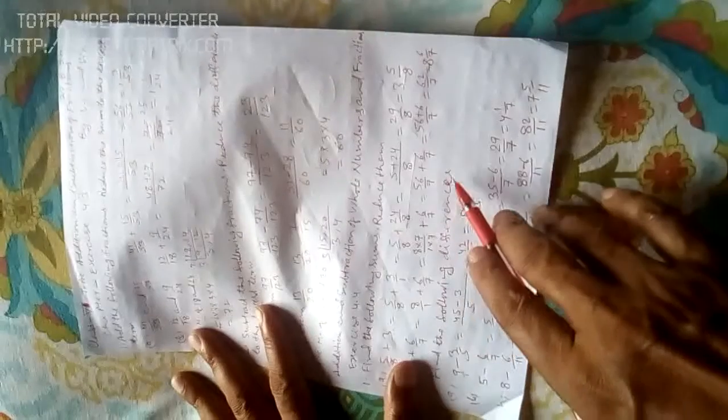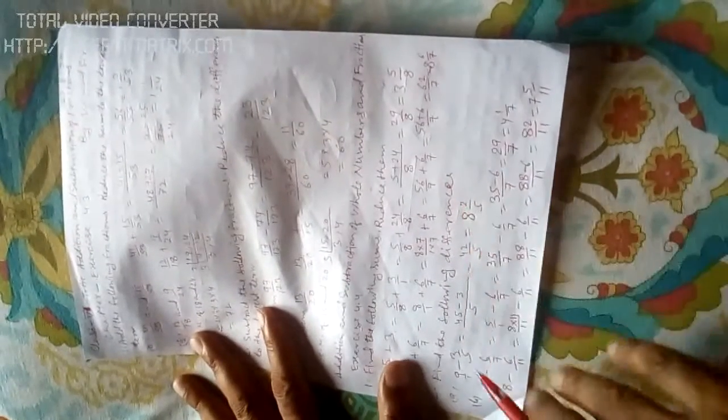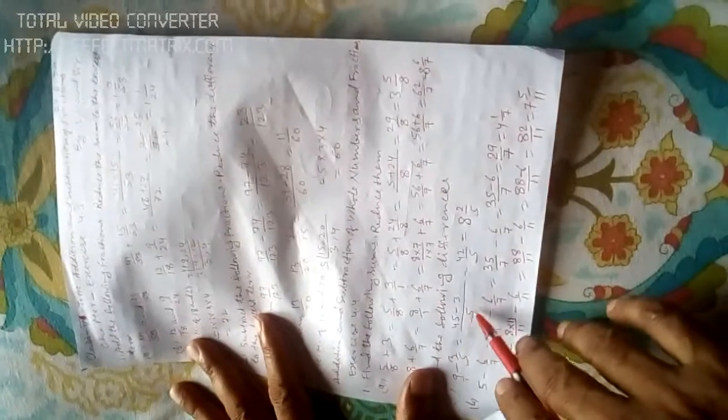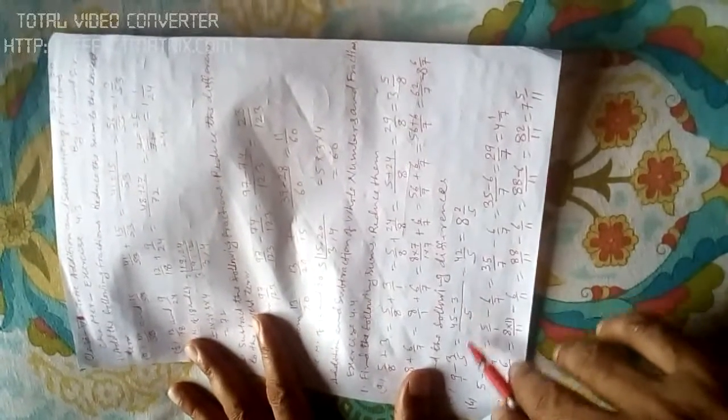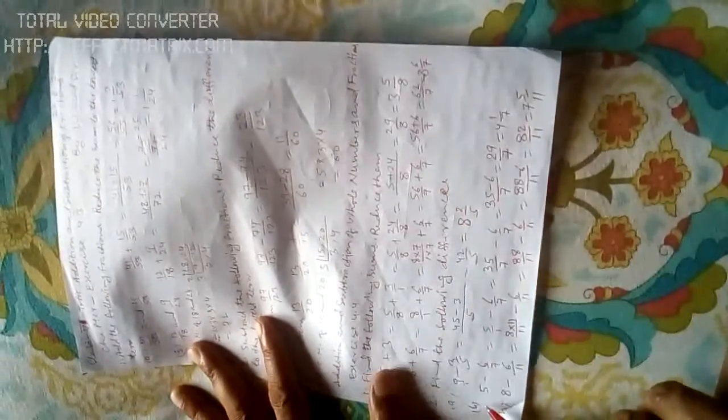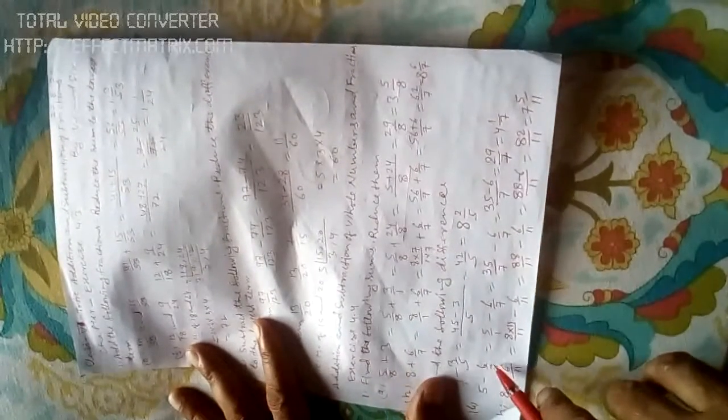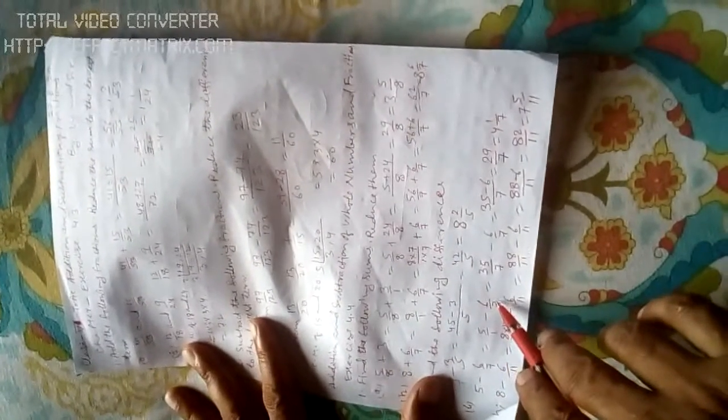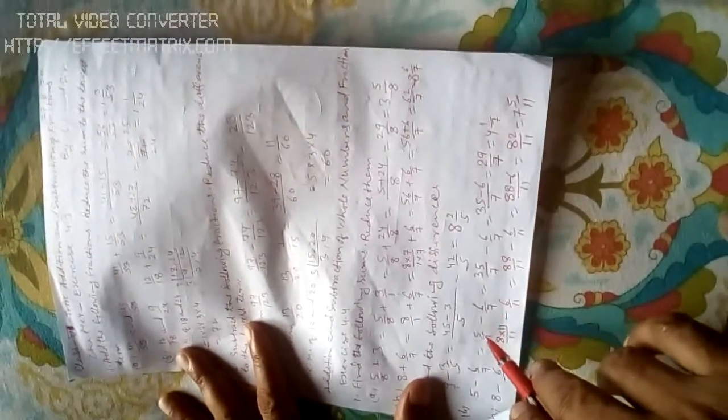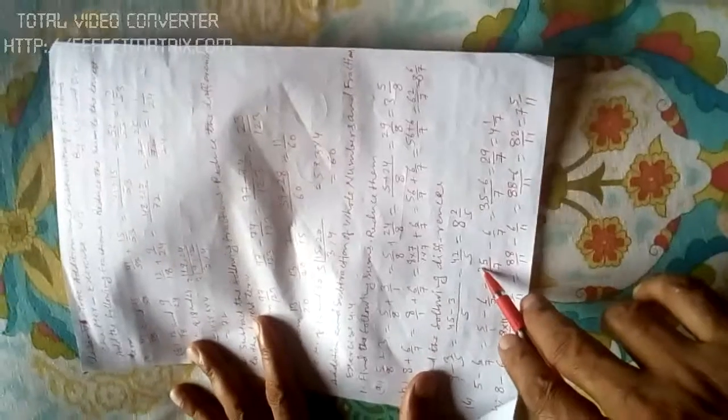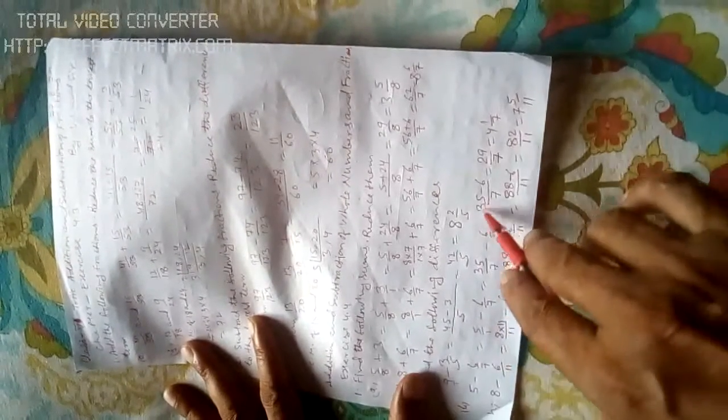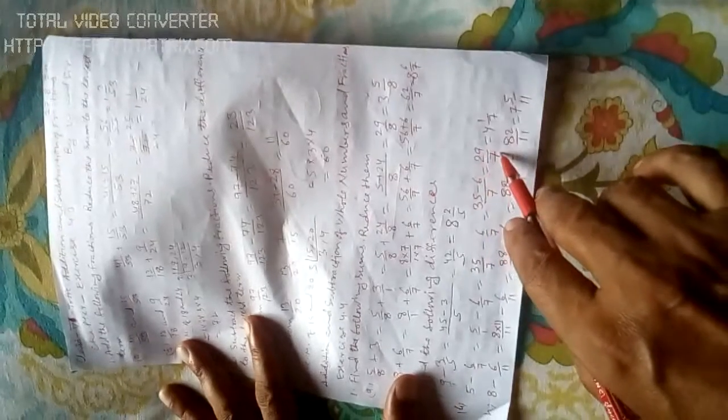Find the following differences. 9 by 1 minus 3 by 5. LCM is 5, so 45 minus 3 equals 42 by 5, which is 8 and 2 by 5. Problem B: 5 minus 6 by 7 equals 5 by 1 minus 6 by 7. To get denominator 7, multiply 5 by 7 gives 35 by 7. Then 35 minus 6 by 7 equals 29 by 7, which is 4 and 1 by 7.